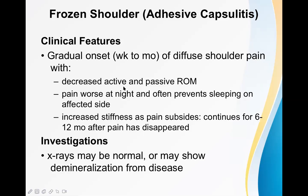Range of motion can be active — where the patient moves it themselves — or passive, where the examiner moves the joint during examination. The pain occurs in the joint and is worse at night, so the patient does not sleep on that side. The patient always sleeps on the opposite side to avoid increased pain.